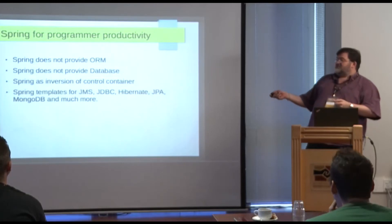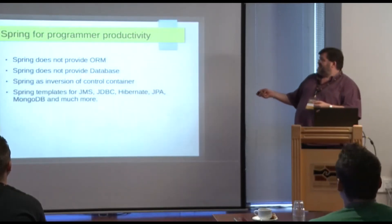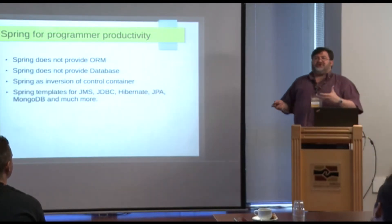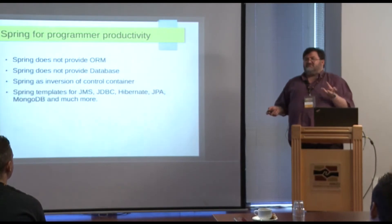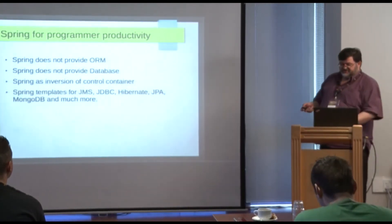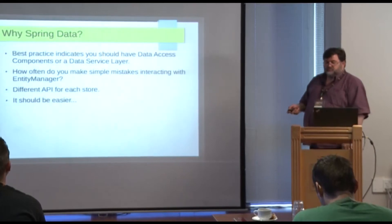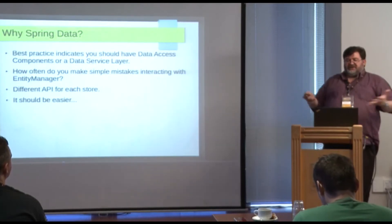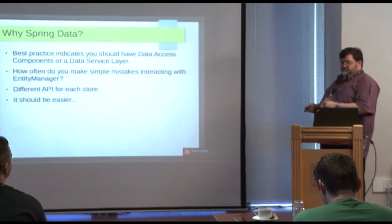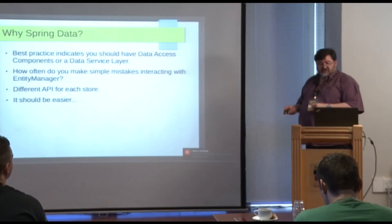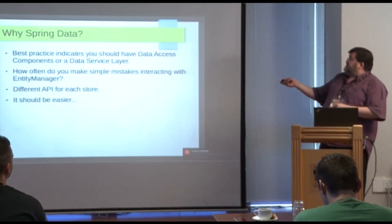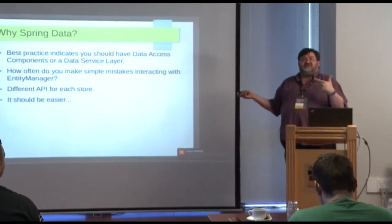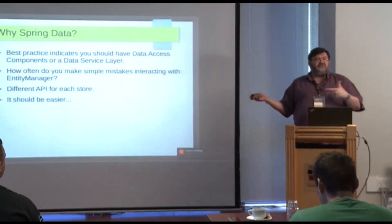Spring provides what they call a template for JMS, JDBC, Hibernate, JPA, MongoDB, and much more. These templates are wrappers around the native APIs that make it easier to work with them. Spring Data takes all of this and adds a new layer on top, and that new layer is similar to what you would have coded by hand as a data access object or data access component.